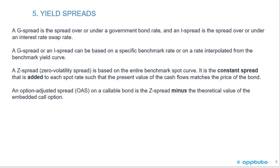Continuing with yield spreads: a G spread is the spread over or under a government bond rate, and an I spread is the spread over or under an interest rate swap rate. Both can be based on a specific benchmark rate or a rate interpolated from a benchmark yield curve. A Z spread, or zero volatility spread, is based on the entire benchmark spot curve — it is the constant spread added to each spot rate such that the present value of cash flows matches the bond's price. An option adjusted spread, OAS, on a callable bond is the Z spread minus the theoretical value of the embedded call option.